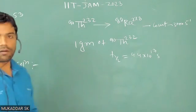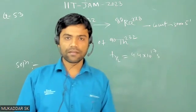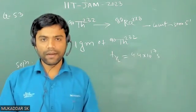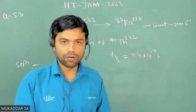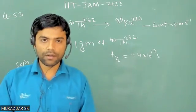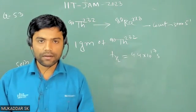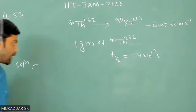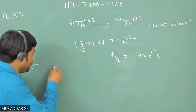So how will we calculate the efficiency? To calculate the efficiency, first you have to calculate the total decay rate. The efficiency of the detector is nothing but the total count rate divided by the total decay rate of alpha particles. So I'll calculate the decay rate or activity of the sample.